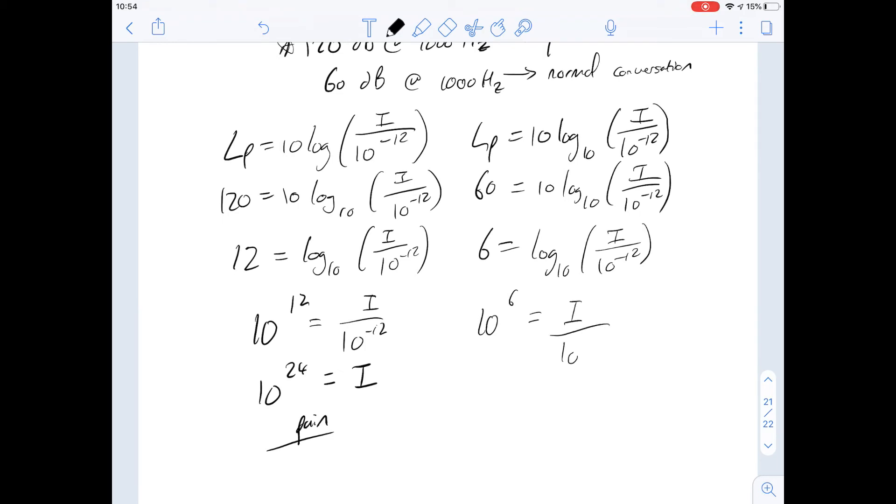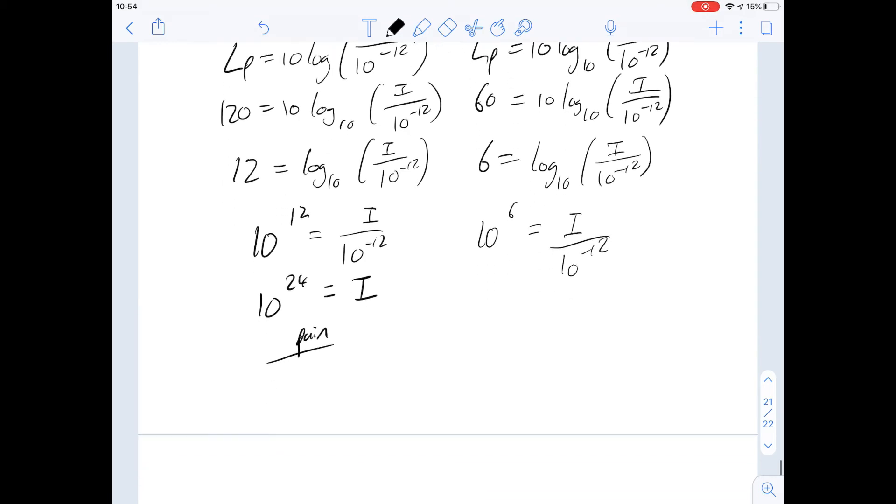Again, with our log rules, we know that 10 to the 6 is going to be equal to i over 10 to the minus 12. So if we multiply both sides, then we get 10 to the 18 equal to i.